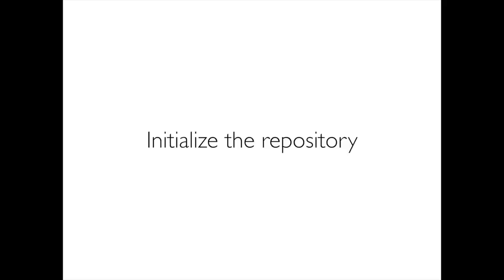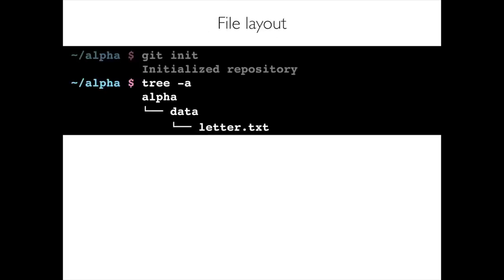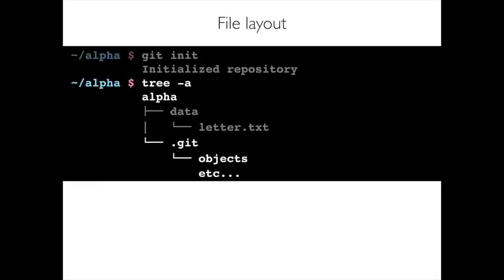Let's initialise this as a Git repository. We run git init, and Git says it initialised this as a repository. Looking at the file layout again, we've still got our files — the data directory and letter.txt — which is known as the working copy in Git parlance. But now, after that init, we've also got a .git directory at the top of the alpha directory, which contains all of Git's stuff: things like the objects directory and more.